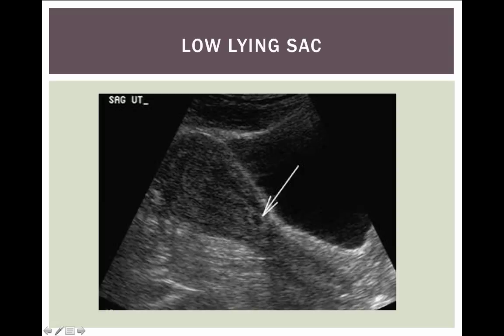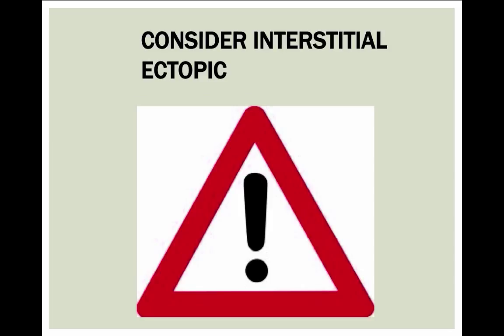This is an example of a low-lying sac. This is again high risk for miscarriage, but you've also got to think about the interstitial pregnancy. Interstitial ectopics are hard to diagnose, they have high risk for rupture, and usually patients tend to do worse because they bleed more and they're found later. That's why we talk about finding a properly placed intrauterine pregnancy - when you see a sac that maybe isn't quite in the right place or is low-lying, you need to think about an interstitial ectopic.